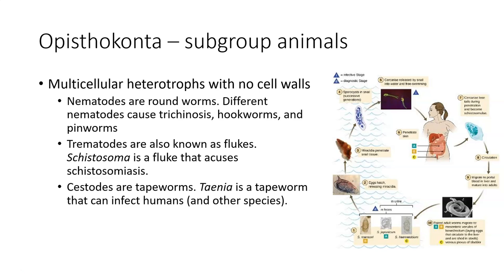Cestodes — class Cestoda — are tapeworms, and humans can get tapeworms from eating undercooked meat: fish like sushi, or pork. If you're eating feral hogs, you've got to make sure you cook it really well. If you get a tapeworm, not only can it be a GI parasite, but it can actually leave the gastrointestinal tract, travel to the brain, and cause major problems. So tapeworms aren't just about losing weight — they can get into your brain and kill you. Don't play around with tapeworms.